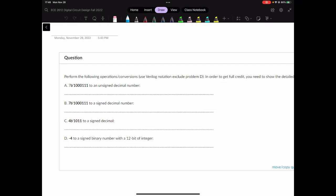For the first question, we had these four parts. First one was a binary number, 7-bit binary number, that I want to convert to an unsigned decimal number. Over here, I said use Verilog notation, exclude problem D. Please read the question carefully because you may lose points for not paying attention to this part, because I wanted it in Verilog notation.